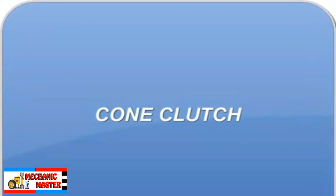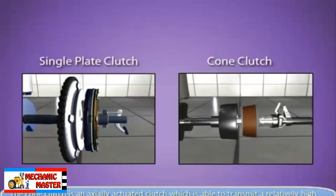Cone Clutch. The cone clutch is an axially actuated clutch which is able to transmit a relatively high torque for its size compared to a single plate clutch of the same size due to increased surface area.